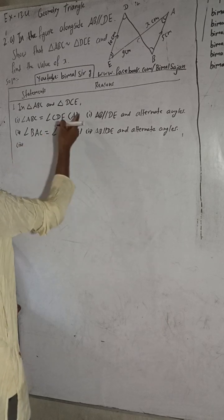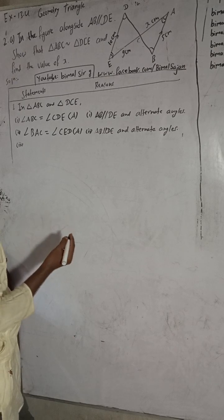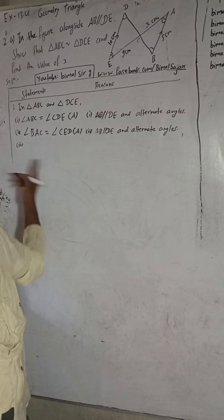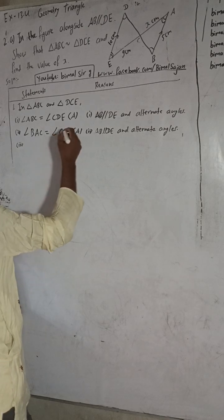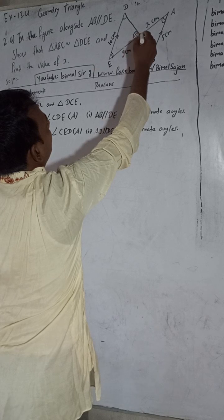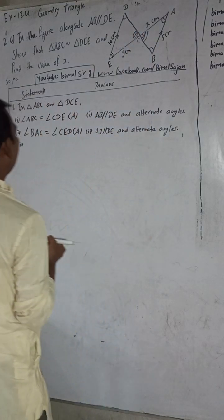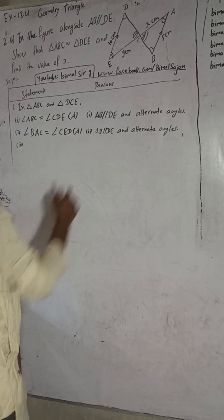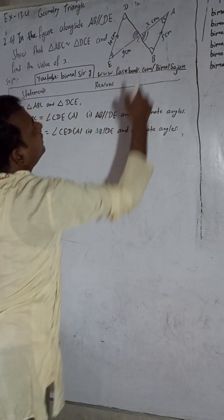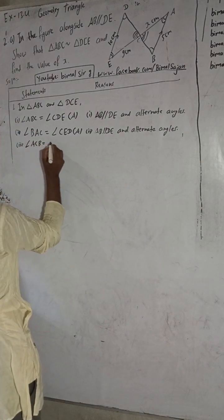Reason number 3: If two angles of a triangle are equal, the third angle is automatically equal — that is a remaining angle. Alternatively, you can write that angle ACB is equal to angle DCE because these are vertically opposite angles.